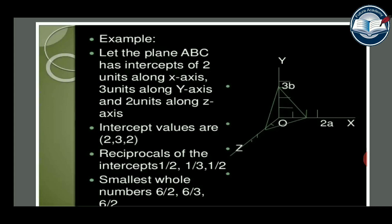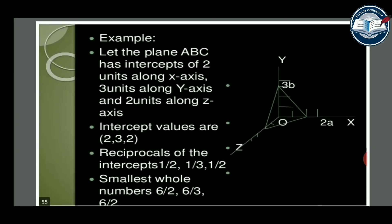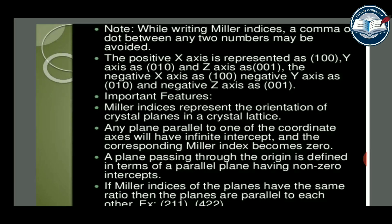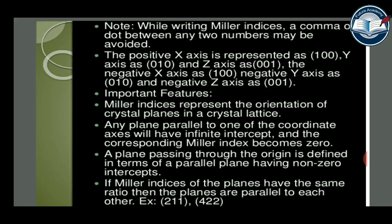Example: a plane ABC has intercepts of 2 units along X-axis, 3 units along Y-axis, and 2 units along Z-axis. Intercept values: 2, 3, 2. Reciprocals: 1/2, 1/3, 1/2. Multiplying by LCM = 6: 3, 2, 3 — so Miller indices are (3 2 3). Note: when writing Miller indices, no comma or dot between numbers. Positive X, Y, Z axes are represented as (1 0 0), (0 1 0), (0 0 1) respectively. Negative X, Y, Z axes are represented with a bar notation.